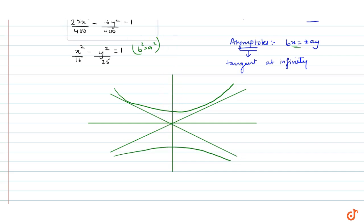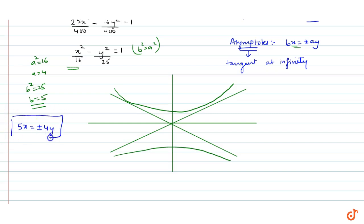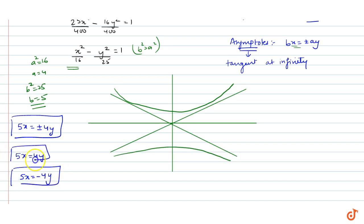Looking at y = 1, the asymptote equations: here a² = 16 so a = 4, and b² = 25 so b = 5. So the equations become 5x = ±4y. That means one equation is 5x = 4y and the other is 5x = −4y.